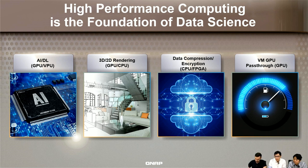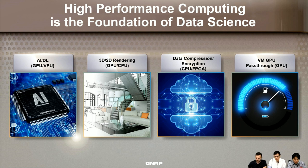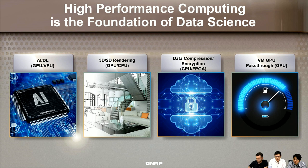Many high-technology applications require very powerful, high computing power machines to help achieve a lot of jobs. Like AI — of course you leverage GPU or VPU for the computing. Also, many 2D or 3D video or image designers need rendering that uses computing power. And data compression or encryption — of course you need CPU or a lot of adapters for acceleration.